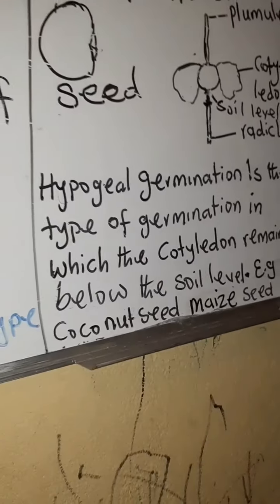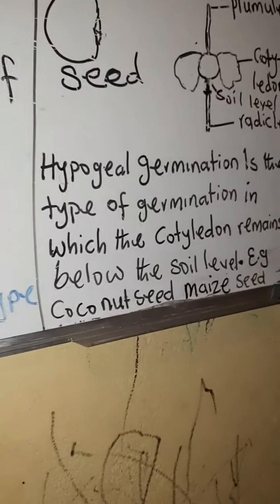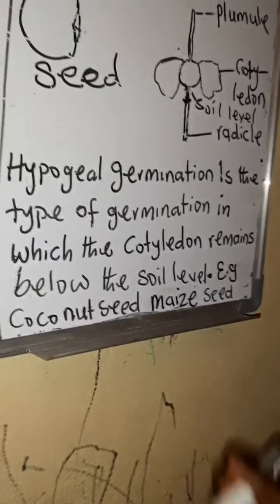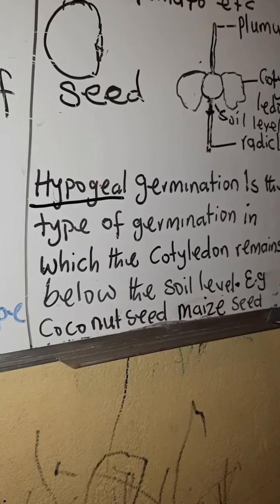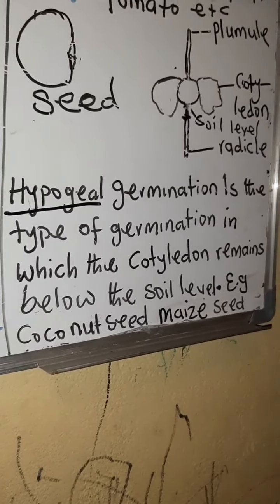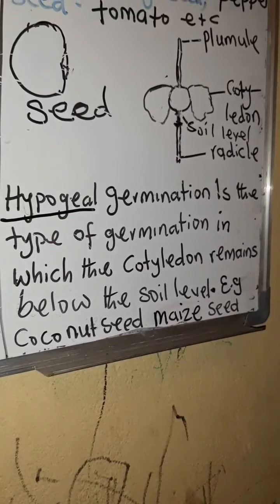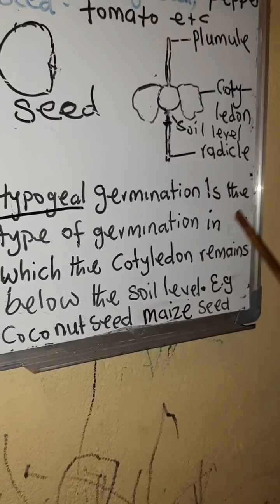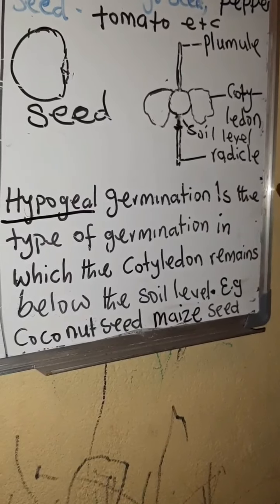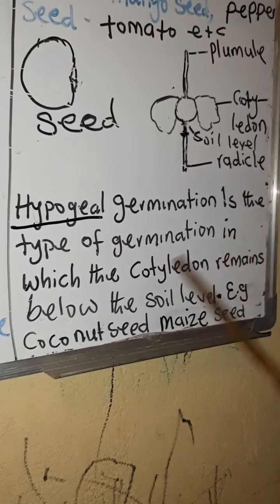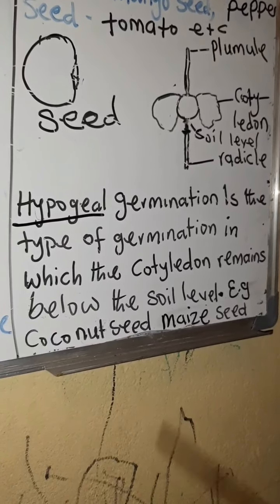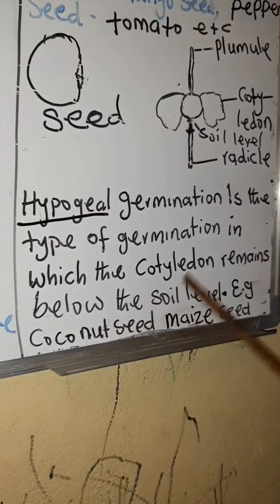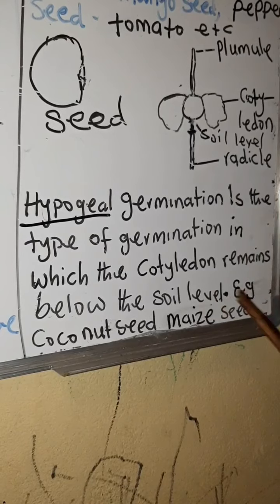The second type is hypogeal germination. Hypogeal germination is a type of germination in which the cotyledon remains below the soil level.